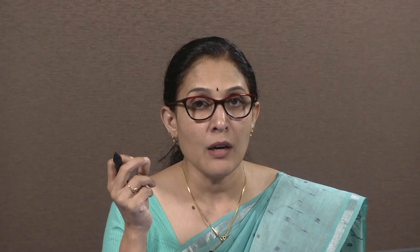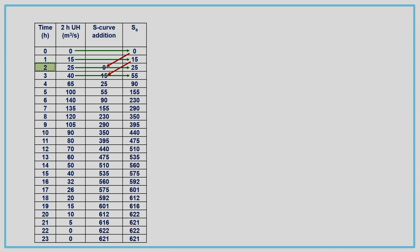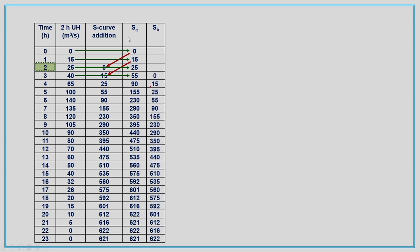If you directly add the ordinate corresponding to SA at time t equal to 0 with 2 hours, there will be no mistake. If you are not sure, you need to make the S curve addition column and place it at the correct time. So 15 will be put there. From the next step onwards there will be no confusion, and you can get the next S hydrograph ordinate by adding 25 plus 0, then 40 plus 15 gives 55. In that way we proceed and get all the ordinates of the S hydrograph. The next step is to lag the S hydrograph by the required duration, which is represented here as SB.